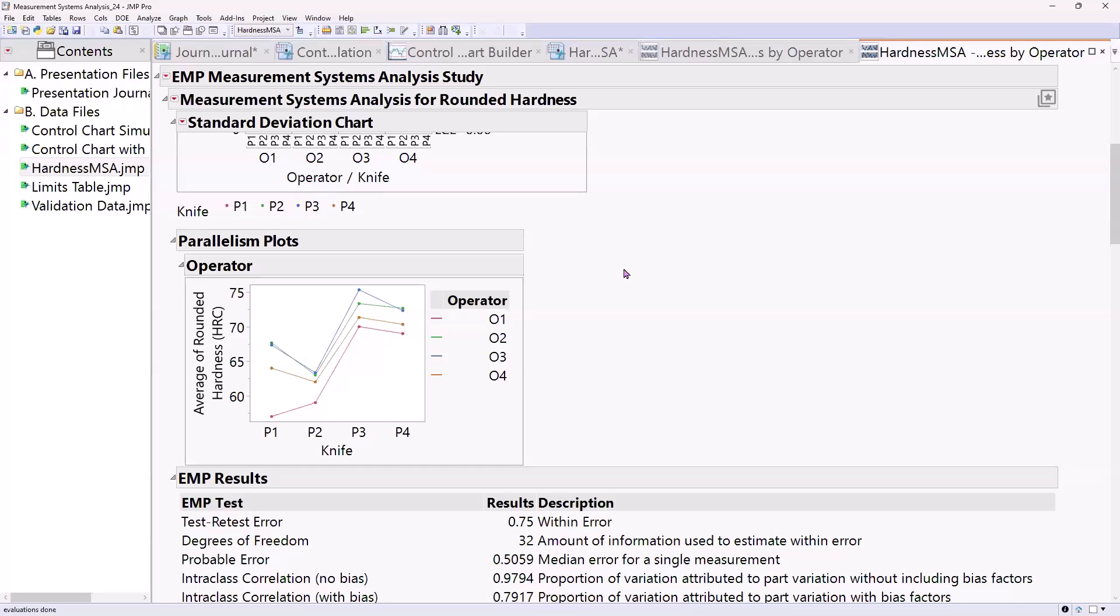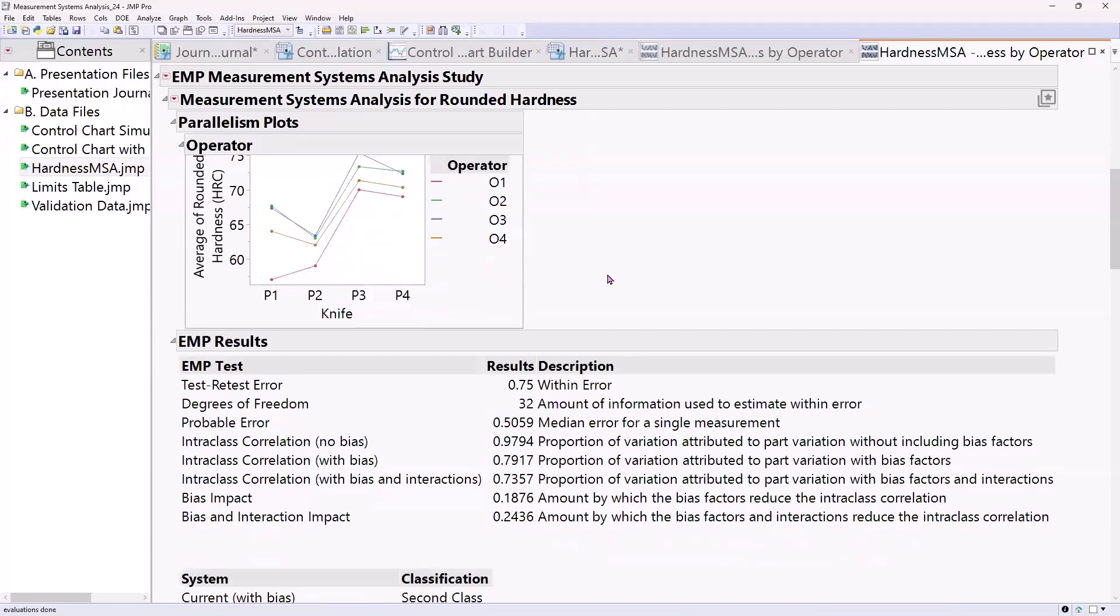Another one that I really like graphically is this parallelism plot. Parallelism plots also show up in the interaction profiler, in the prediction profiler and fit model, and other places where the profiler is used. The way that you interpret these is any place where the lines are not parallel is an indication of an interaction. So we do have some indication that there could be an interaction between operator and part, so it probably has to do with how the operator is measuring the part.